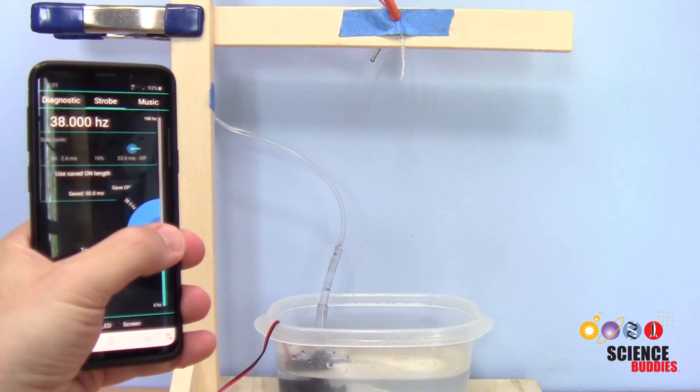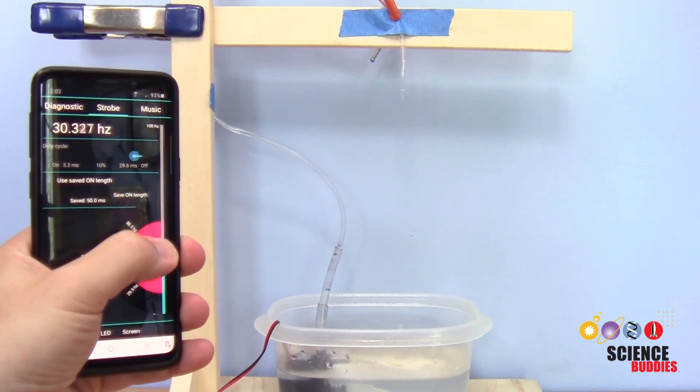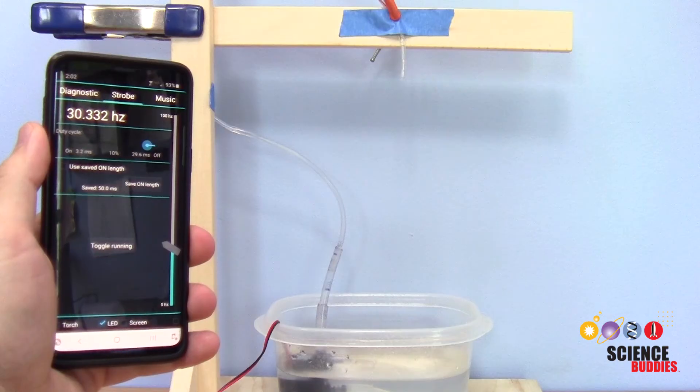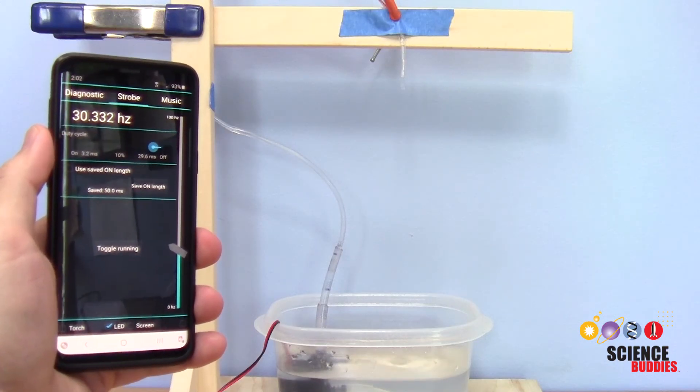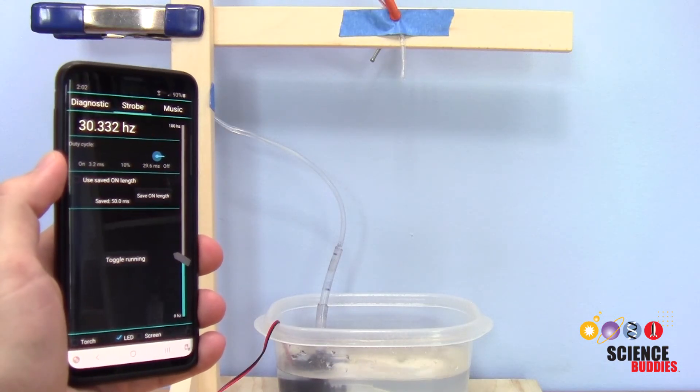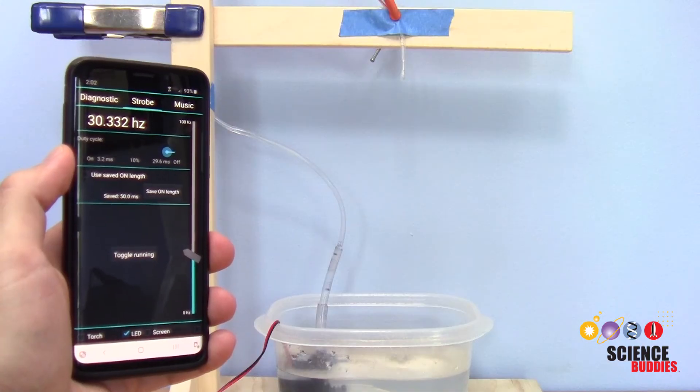To get the illusion to work, you'll need to adjust the frequency of your strobe and the frequency of your water drops so they are very close to each other. You can change the frequency of the strobe using your app, and the frequency of the water drops using the clamp.